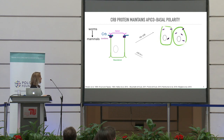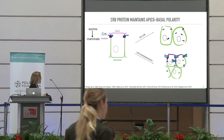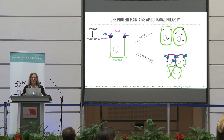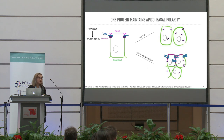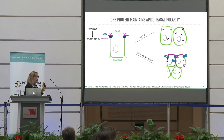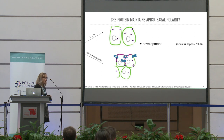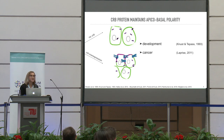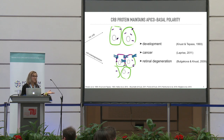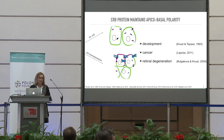However, when we have too much of this protein, the morphology of the tissue is also affected — we see overgrowth of the tissue or multilayering of the epithelium. This protein is truly crucial for proper tissue morphology in all animals. Any dysregulation in the amount of Crumbs protein is present in cancers, and also leads to degeneration of the retina and blindness in humans.